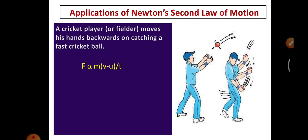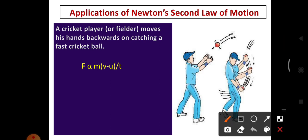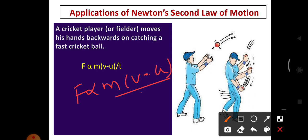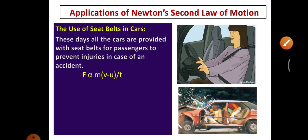While the cricket player moves his hands backward on catching a fast cricket ball, he is extending the time. With F ∝ M(V − U)/T, when time increases, force decreases. When the force decreases, the momentum also decreases — the ball can be stopped. When momentum is zero, we can stop the ball. For that purpose only, the cricket player moves his hand backward, increasing the time so that force and momentum approach zero.